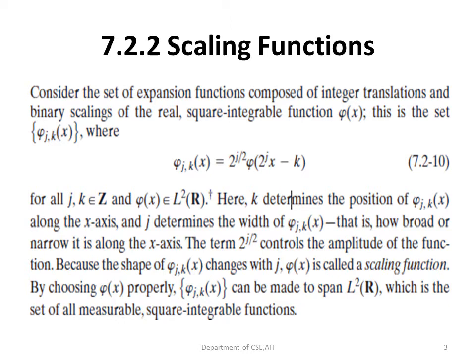Here k determines the position of φ(j,k,x) along the x-axis, and j determines the width — how broad or narrow it is along the x-axis. The term 2^(j/2) controls the amplitude of this function, and the shape changes along with j. This φ(x) is called the scaling function. If φ(x) is chosen properly, φ(j,k,x) can be made to span L²(R), the set of all measurable square integrable functions.